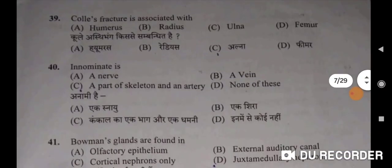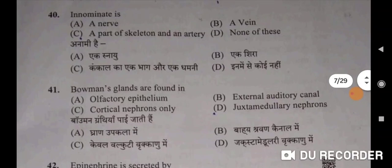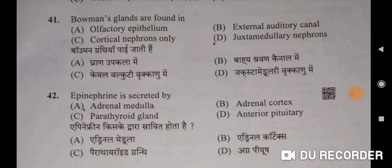Thirty-eighth question: osmoregulation is the function of vasopressin — A will be the correct option. Parasaran niyaman kiska kaary hai — vasopressin ka. Thirty-ninth: Colles' fracture is associated with radius — B will be the correct option. Fortieth: innominate is a part of a skeleton and an artery — C will be the correct option. Anaami hai kankal ka ek bhaag aur ek dhamni. Forty-first: Bowman's glands are found in olfactory epithelium — A will be the correct option.